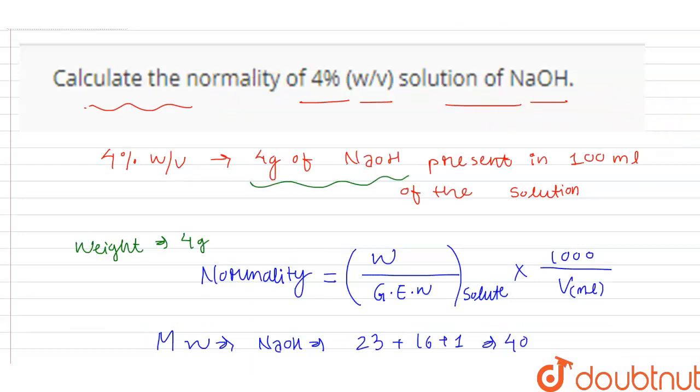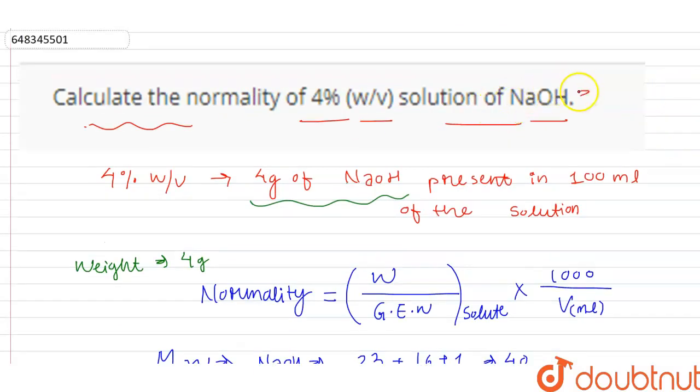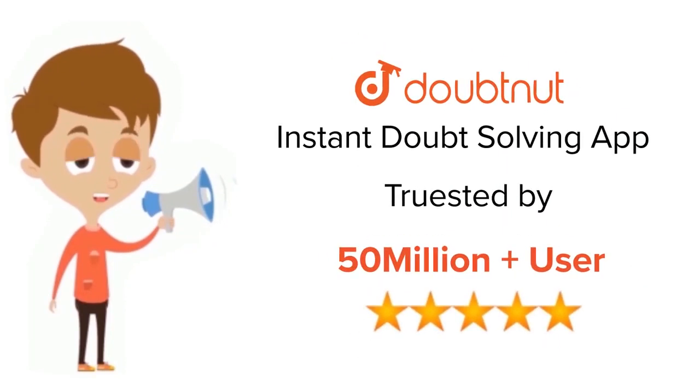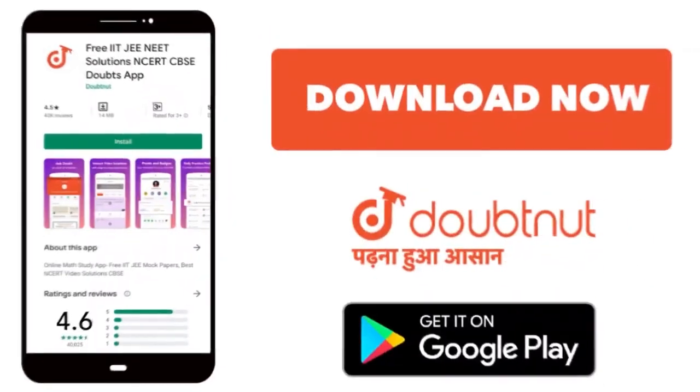Calculate the normality of 4% weight by volume solution NaOH, and that will be 1N. For Class 6 to 12, IIT-JEE and NEET level, trusted by more than 5 crore students. Download Doubtnet app today.